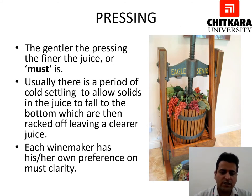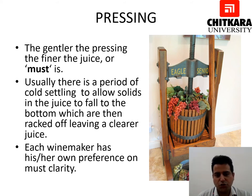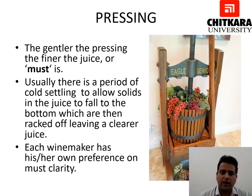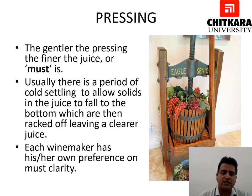The next process is pressing. The gentler the pressing, the finer the juice or must. Usually there is a period of cold settling to allow solids in the juice to fall to the bottom, which are then racked off, leaving a clearer juice. The must is allowed to settle at a cold temperature so that unwanted impurities can be removed. Each wine maker has his or her own preference on must clarity.